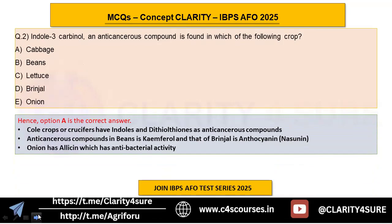These compounds help in preventing cancer, so crucifers are a very good source of anticancerous compounds. The anticancerous compound in beans is kaempferol, and in brinjal it is the anthocyanin nasunin. Onion has allicin, which has antibacterial activity. From one question you get a wealth of related information about which areas IBPS may ask questions.